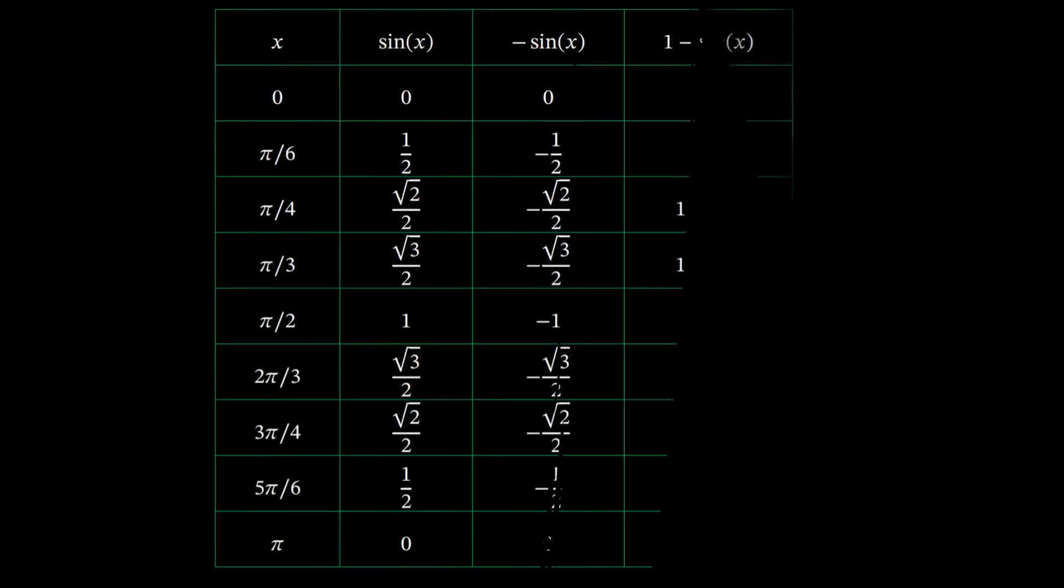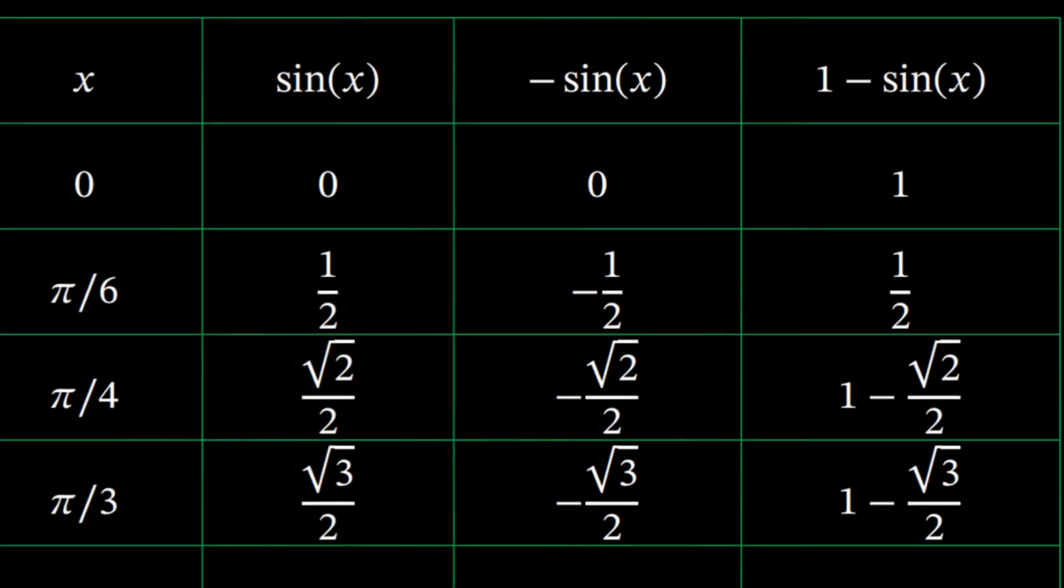We create a table for x and sine of x. Then, in the next column, we calculate negative sine of x by multiplying the second column with negative one. Finally, we calculate one minus sine of x. That's the function we're studying.